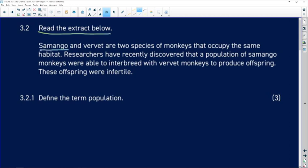Samango and vervet are two species of monkeys. So we have Samango monkeys and vervet monkeys. They occupy the same habitat. So in the same area we can find Samango monkeys and we can find vervet monkeys.